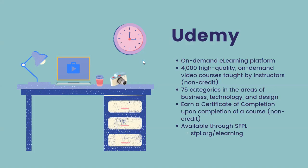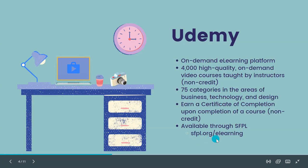Udemy is an on-demand e-learning platform accessible online, on your smartphone, tablet, laptop, or desktop computer. You have access to over 4,000 high-quality on-demand video courses taught by instructors, with about 75 categories in areas of business, technology, and design. These courses are non-credit, but if you complete any of them, you do earn a certificate of completion. This platform is available through SFPL at sfpl.org/e-learning.